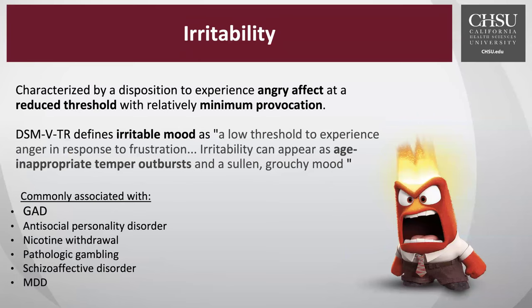Irritability is different than impulsivity. Impulsivity is about that lack of inhibition or not having the forethought to limit oneself from potentially harmful activities, whereas irritability is really about affect — about mood — a patient having a reduced threshold for anger with relatively minimal provocation. A person who's irritable might be said to have a short fuse. The DSM-5 text revision defines irritable mood as a low threshold to experience anger in response to frustration, and it can appear as age-inappropriate temper outbursts or a sullen, grouchy mood. Like impulsivity, irritability is not a diagnosis in itself, but it can be associated with generalized anxiety disorder, antisocial personality disorder, various withdrawal problems, pathologic gambling, schizoaffective disorder, and major depressive disorder.